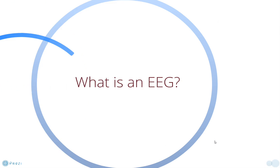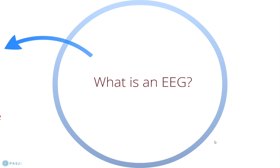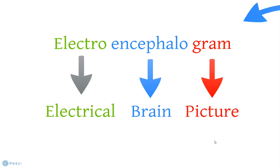So the first question you might ask is what is an EEG? EEG stands for electroencephalogram which means electrical brain picture, or in other words, mapping out the electrical activity in the brain.